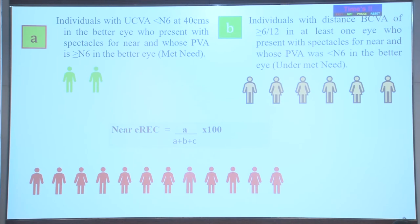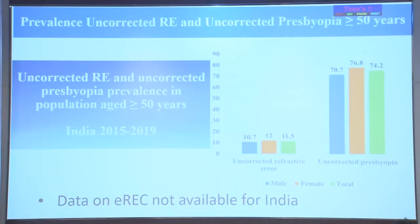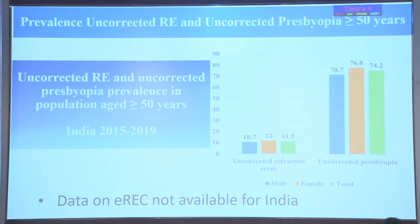When you divide the met need by the undermet need plus met need plus unmet need, that gives you the refractive error coverage for near vision. From the national survey conducted in 2019, we found the prevalence of uncorrected presbyopia in population aged more than 50 years as 74.2%, which is quite high. Sub-national surveys indicate that EREC in different regions ranges from 50 to 60%.